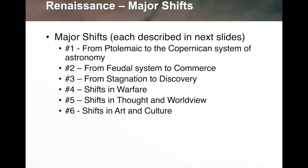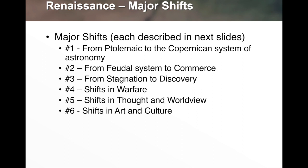The remainder of this PowerPoint covers the six major shifts from the Middle Ages to the Renaissance. These are profound shifts: Shift 1 — from the Ptolemaic to the Copernican system of astronomy; Shift 2 — from the feudal system to commerce; Shift 3 — from stagnation to discovery; Shift 4 — shifts in warfare; Shift 5 — shifts in thought and worldview; and Shift 6 — shifts in art and culture.